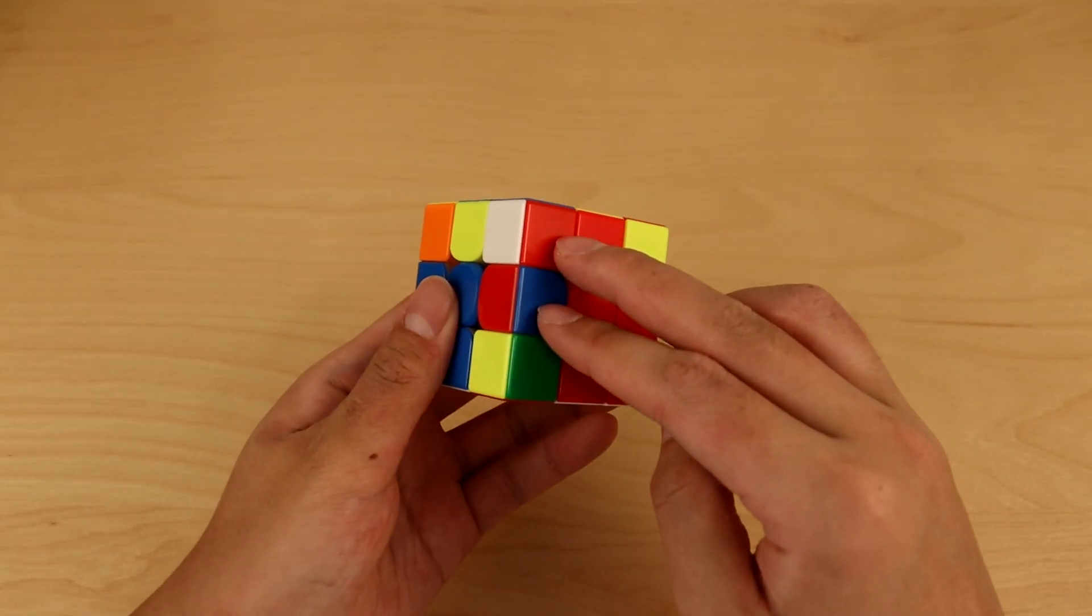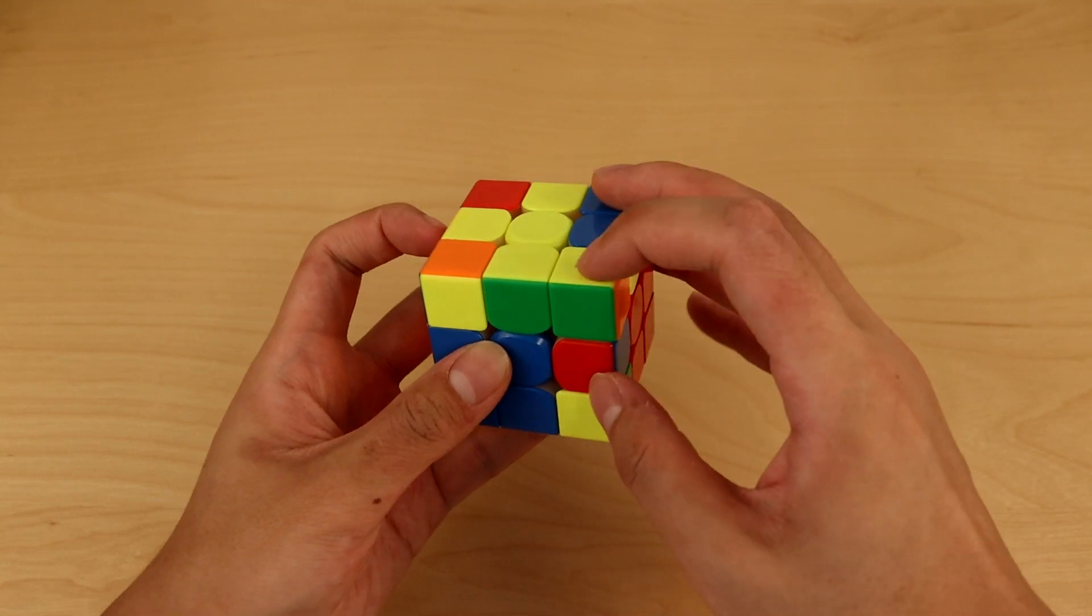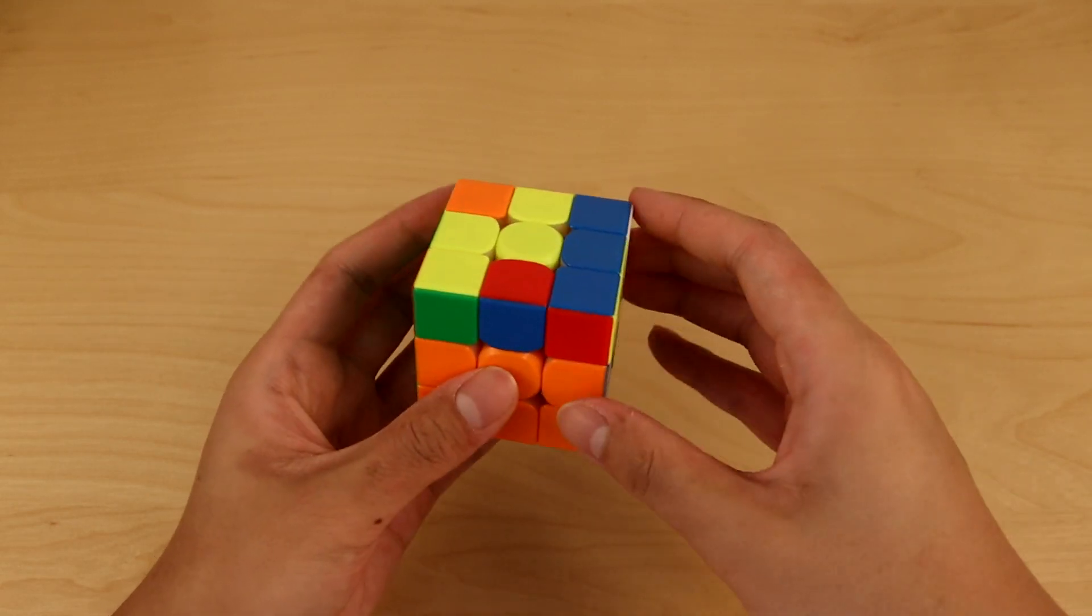Now for the last pair, this is pretty straightforward, but we'll just solve this as normal. So we'll set it up like this, and then we'll solve it in the back.